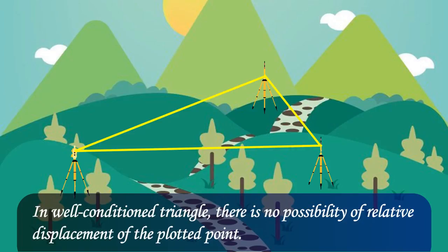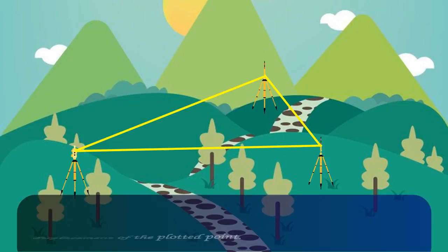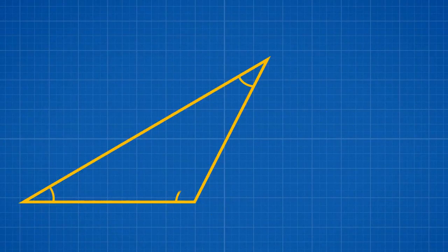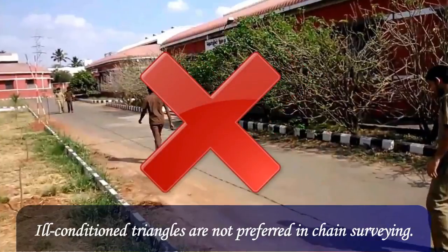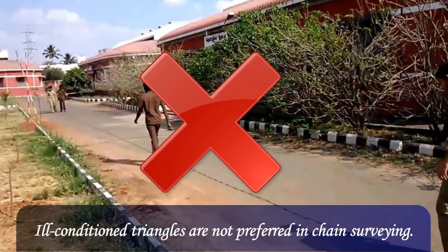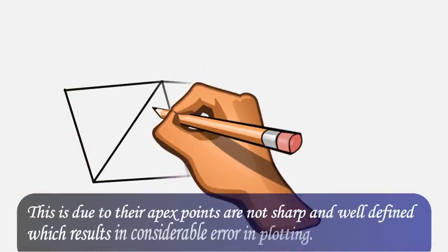A triangle in which an angle is less than 30 degrees or more than 120 degrees is said to be ill-conditioned triangle. Ill-conditioned triangles are not preferred in chain surveying.